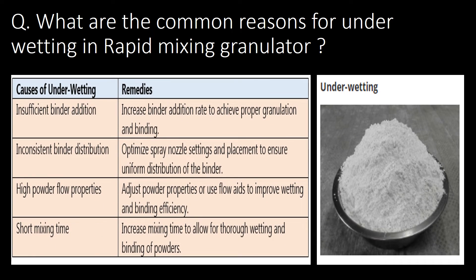What are the common reasons for under-wetting in Rapid Mixing Granulator? Here are the four main causes of under-wetting in Rapid Mixing Granulator: insufficient binder addition, inconsistent binder distribution, high powder flow properties, and short mixing time.